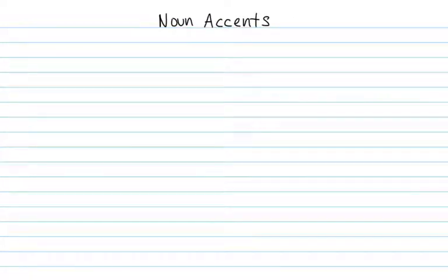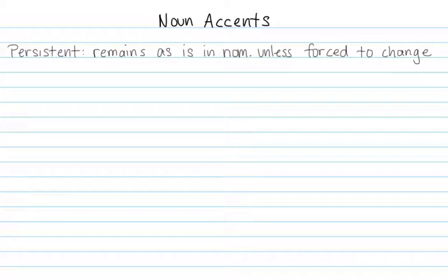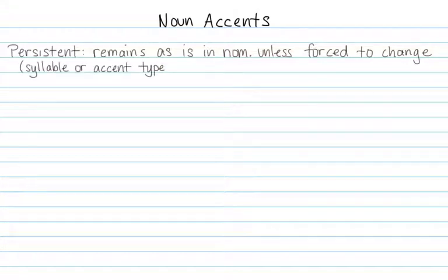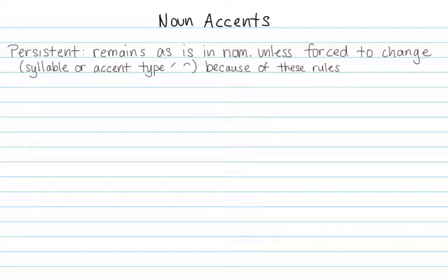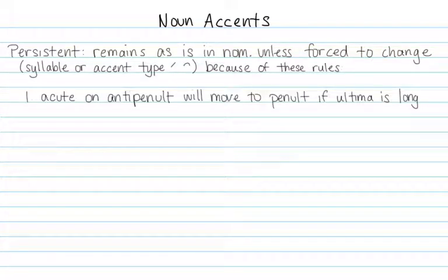Now let's take a look at accents. As we learned in Chapter 2, the accent on a noun is persistent, which means you memorize it where it is in the nominative form, and then it might change — by change I mean which syllable the accent is on might change, or it could change from an acute to a circumflex, depending on the following rules. Rule one: if you have an acute on the antipenult, it will move to the penult if the ultima is long.